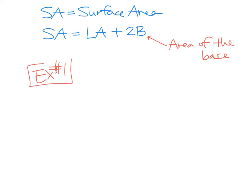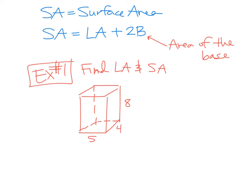So example one. Let's say we have this rectangular prism. So this is 5, this is 4, and this is 8. If I ask you to find the lateral area and the surface area for that figure, here's what you're going to do. You first have to figure out, okay, what are my formulas?